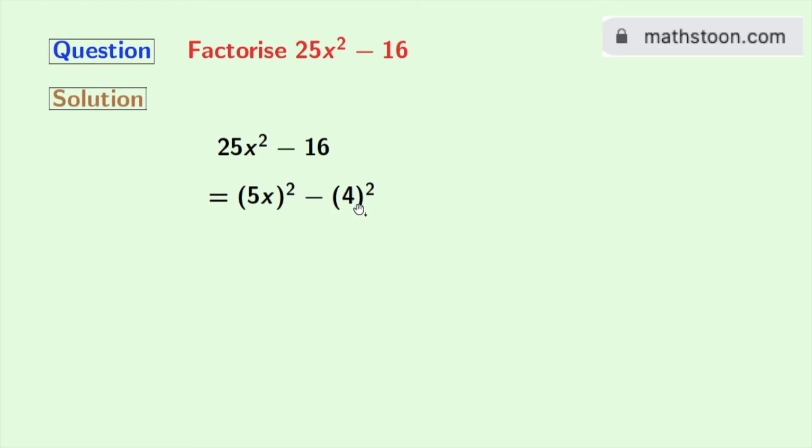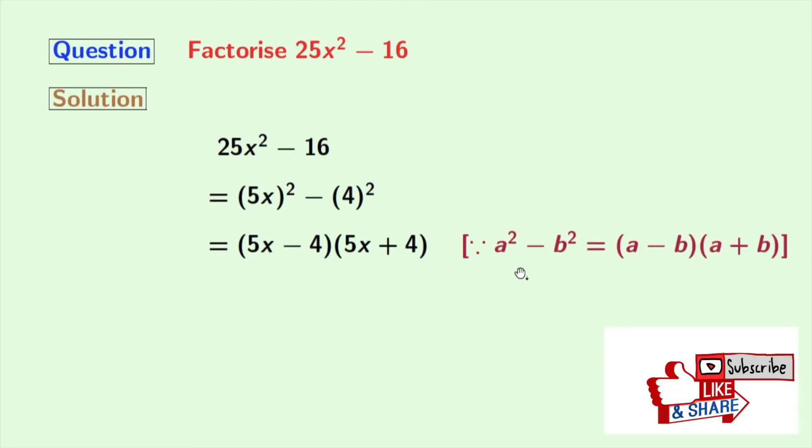Now look that this is in the form of a square minus b square, where a is 5x and b is 4. So we will easily apply the formula of a square minus b square in this expression.